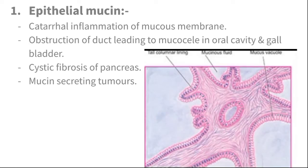The first type of mucoid change is epithelial mucin. Examples include: any catarrhal inflammation of mucous membranes, obstruction of any duct forming a mucocele — a cavity filled with mucus in the oral cavity or gallbladder — cystic fibrosis, which can also occur in the pancreas, and mucin-secreting tumors.